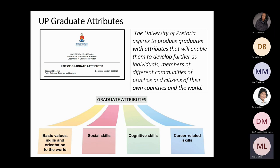The four streams are: basic values, skills and orientation to the world; social skills; cognitive skills, which we use our disciplines to develop; and career-related skills. Global citizenship actually spreads across all four of these categories, and the COIL initiative really lends itself to developing almost all the graduate attributes — specifically global citizenship, cognitive skills in the disciplines, social skills, and with that, career-related skills as well.